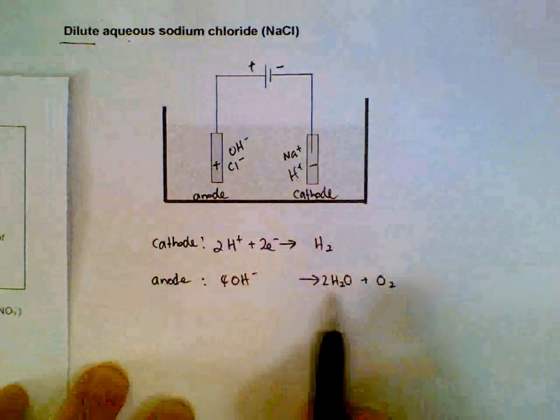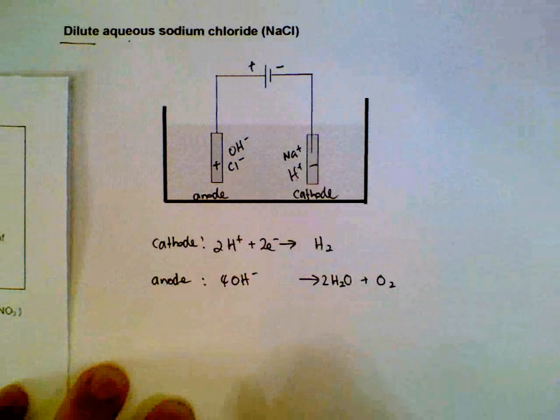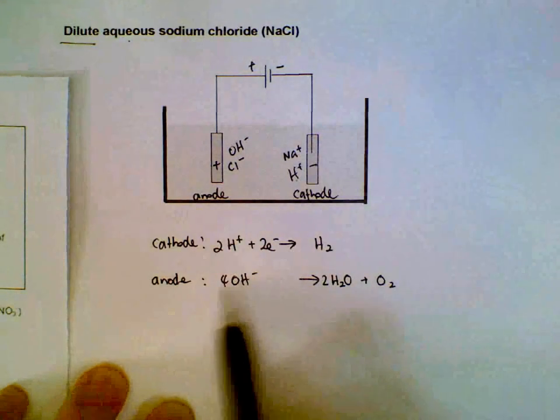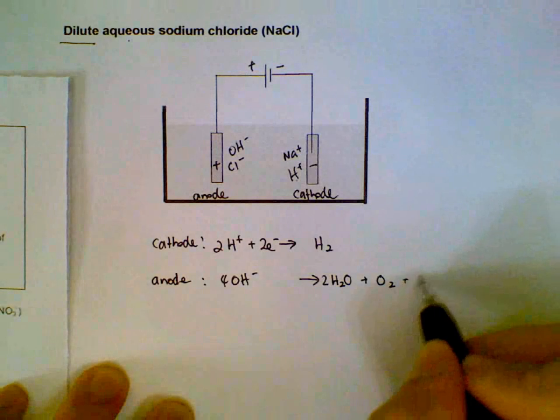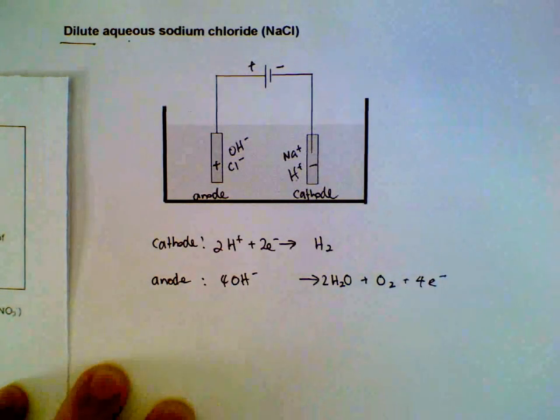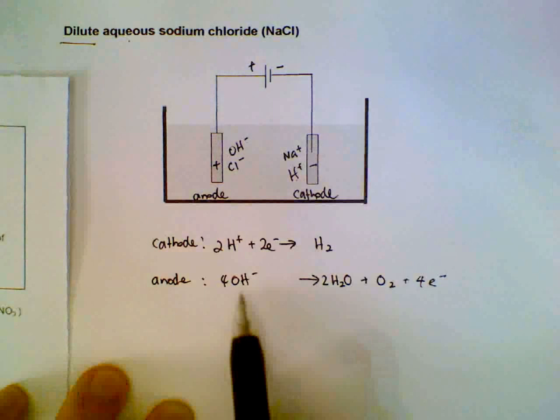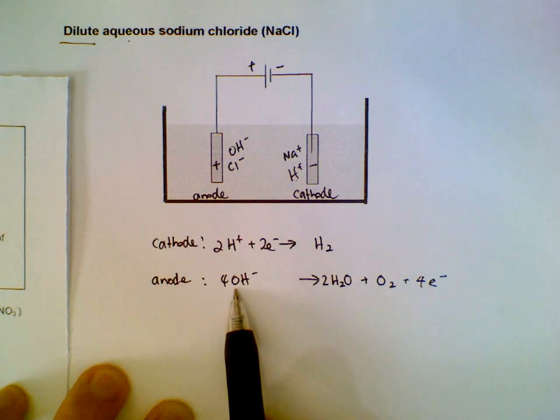This balances out the atoms, but we need to balance the charge also. We have 4 minus on the left side; you need to put the electrons on the other end to make it balanced. It makes sense because it's supposed to be oxidized—it's supposed to lose electrons. So this is what we have for the anode half equation: 4OH- → 2H₂O + O₂ + 4e-.